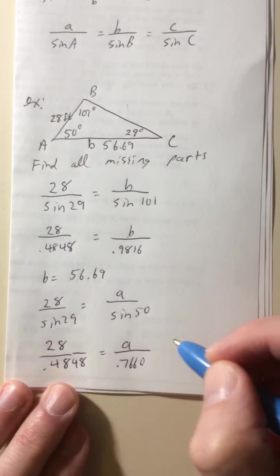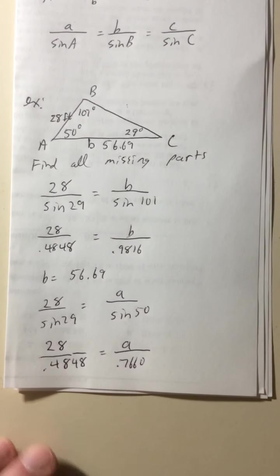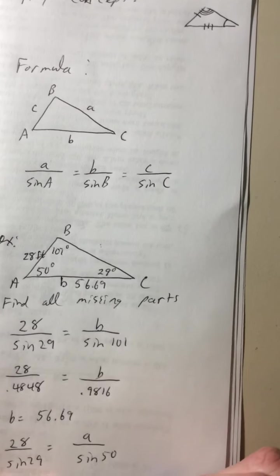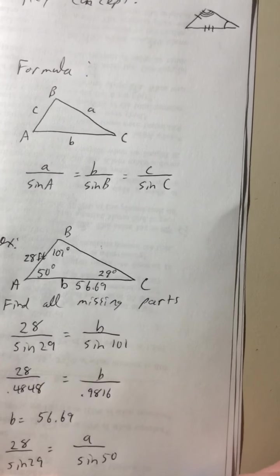So sine of 50 equals 0.7660. So again, we cross multiply. So we're gonna multiply by 28. So times 28 equals, divided by 0.4848 equals, and we got 44.24. So A equals 44.24.